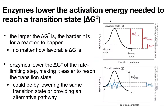We represent the transition state with a double dagger symbol, and the activation energy as delta G double dagger. The overall delta G is the difference between the energy of your substrate and the energy of your products — that doesn't change. What can vary is the path between them. The height of the tallest peak, the highest transition state, that delta G double dagger for that highest energy transition state, is our rate-determining step. So if an enzyme wants to speed up a reaction, it needs to lower that activation barrier.